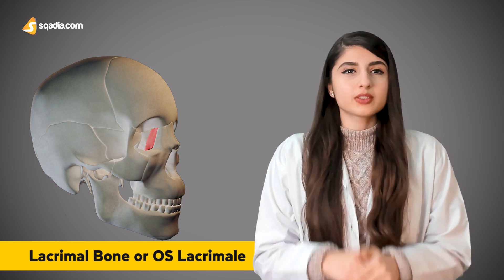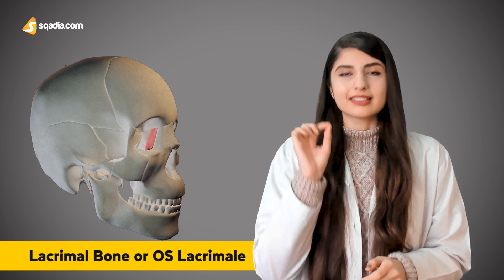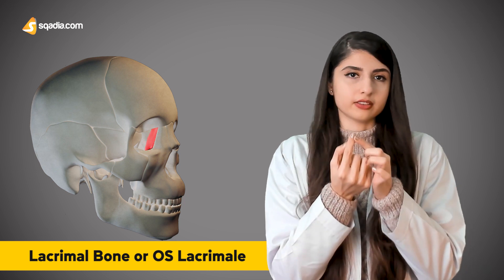This bone is as little as our fingernail. The lacrimal bone is a paired bone, meaning that there are two bones present in our facial skeleton — the right and the left lacrimal bone.